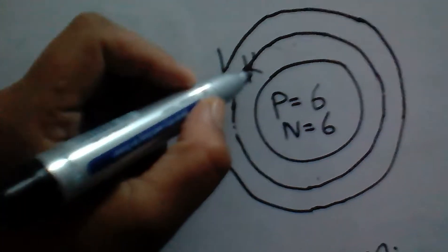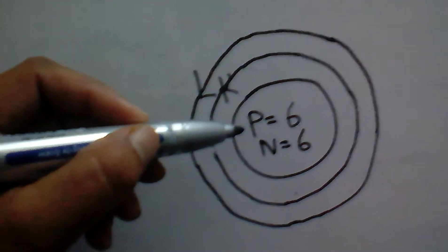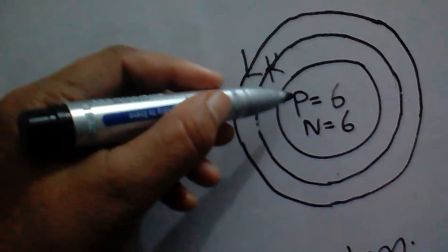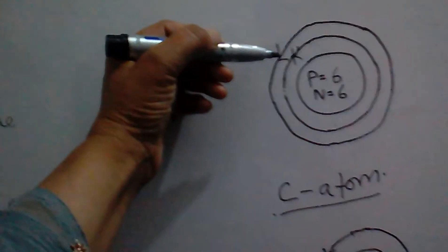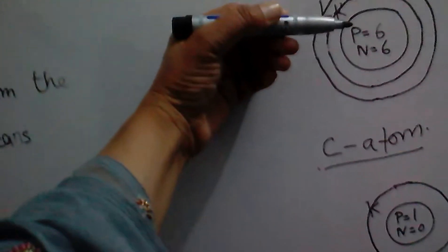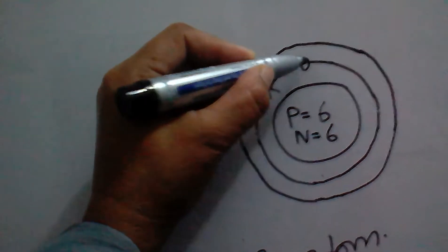We shall accommodate electrons in Carbon Atom's K shell first. Always remember that we'll have to accommodate as many electrons in the atom as is the number of protons in it. Jitne aap ke paas protons honge, aap utne hii electrons is ke andar adjust karoge. In the first or K shell, we'll adjust two electrons.